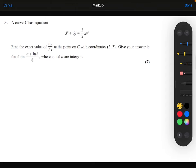The curve C has the equation 3^x + 6y = (3/2)x·y². Find the exact value of dy/dx at the point on C with coordinates (2, 3), giving your answer in the form (A + ln B)/8, where A and B are integers.